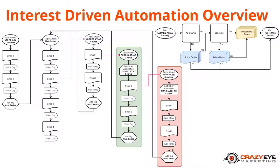That's an overview of the interest-driven automations we're going to be building. This is getting complex, but hopefully you've gone through the rest of the course and all the elements have been building on each other. This is the capstone module — the mac daddy of all the marketing automation you're going to learn. It is advanced, so if you don't have the foundation from earlier training, I recommend going back and watching it before moving forward.